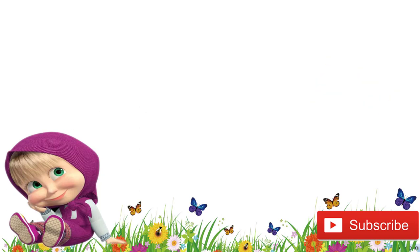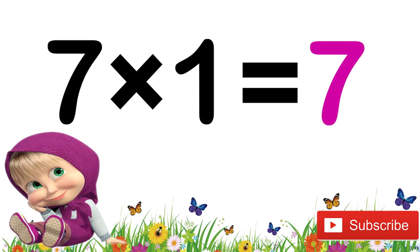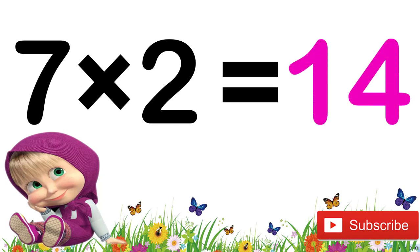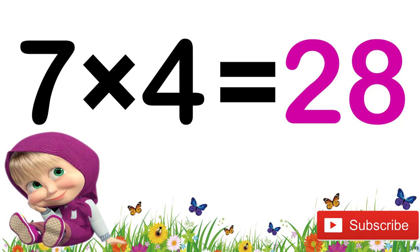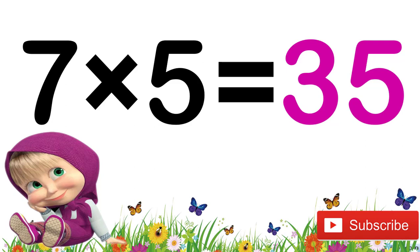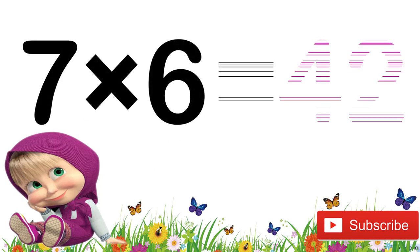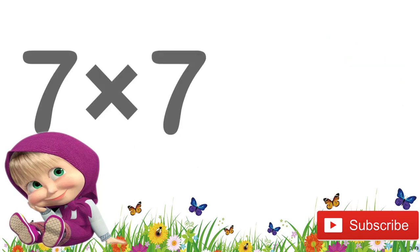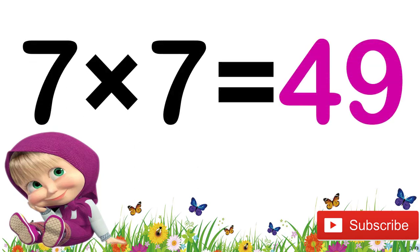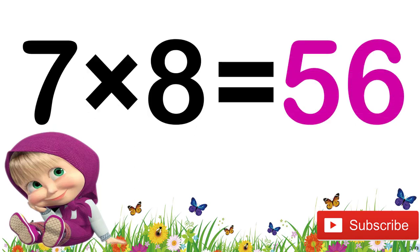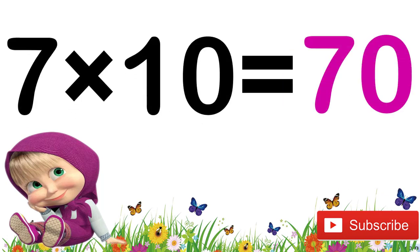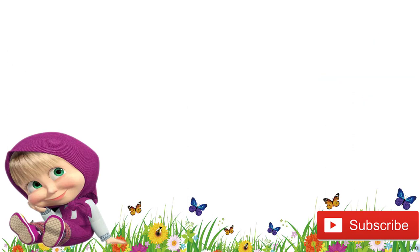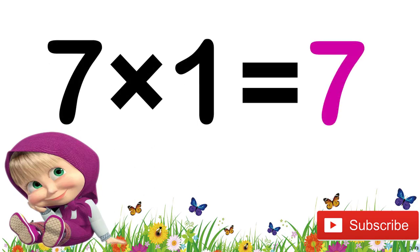Now let's revise again children. 7 ones are 7. 7 twos are 14. 7 twos are 14. 7 threes are 21. 7 fours are 28. 7 fours are 28. 7 fives are 35. 7 sixes are 42. 7 sixes are 42. 7 sevens are 49. 7 eights are 56. 7 nines are 63. 7 tens are 70.